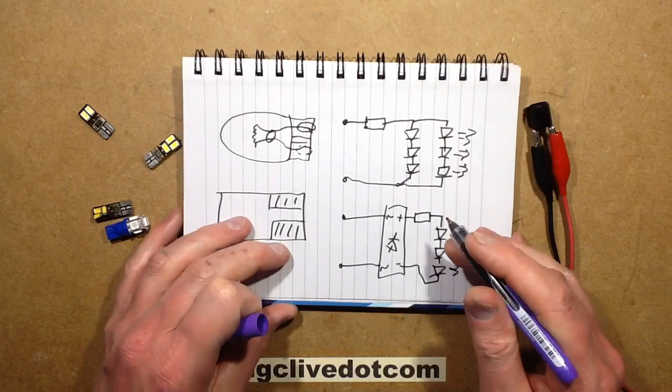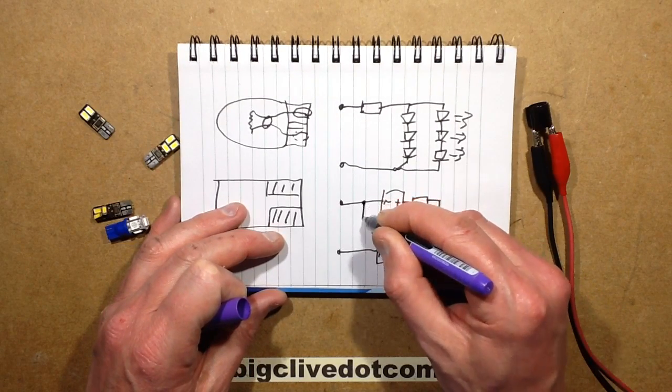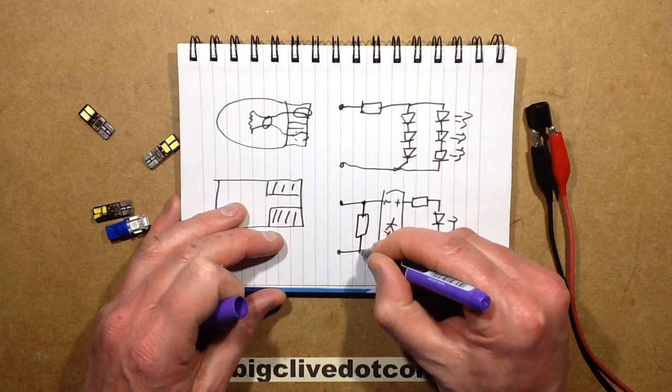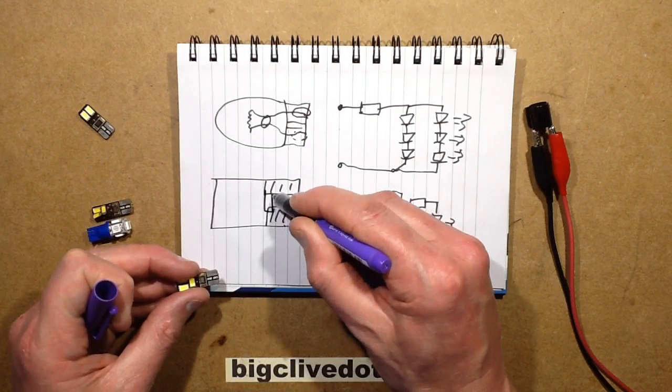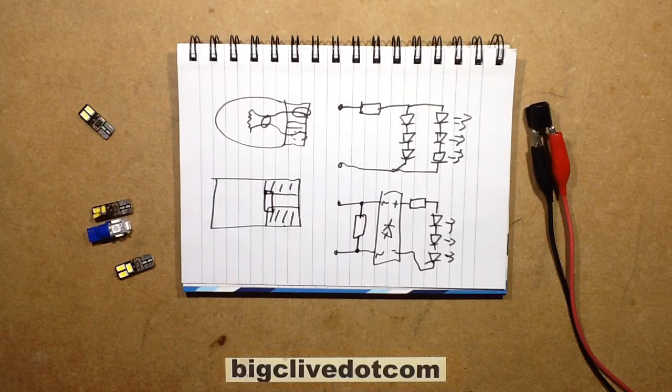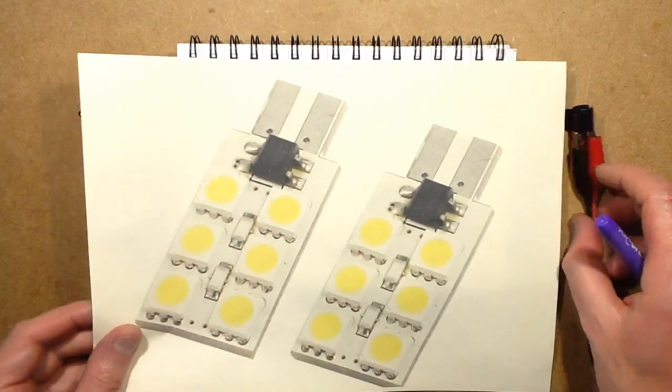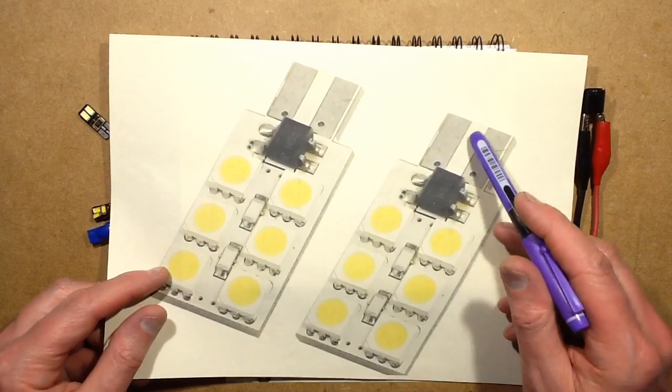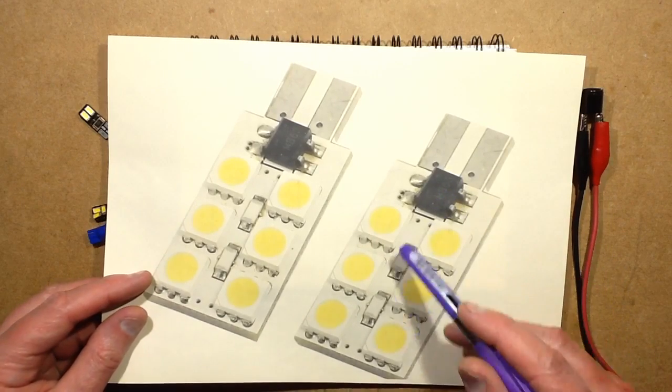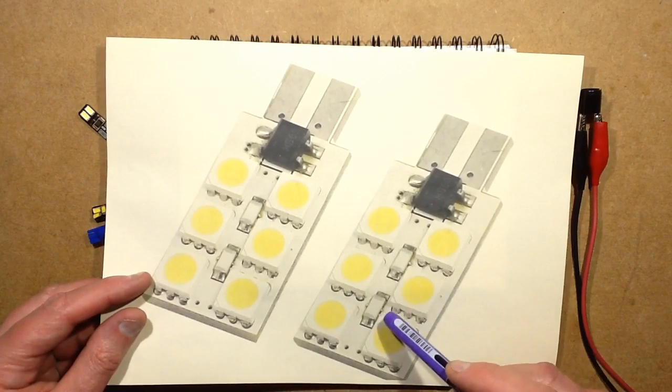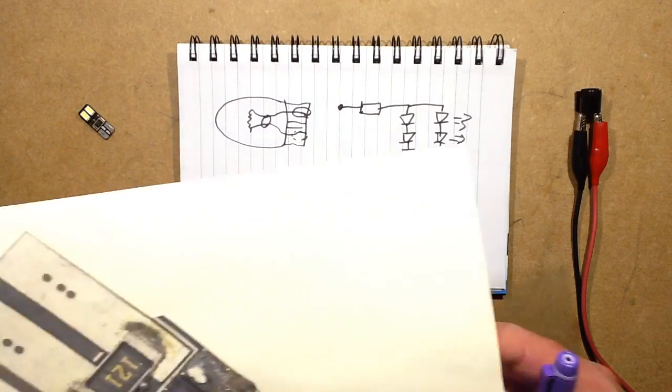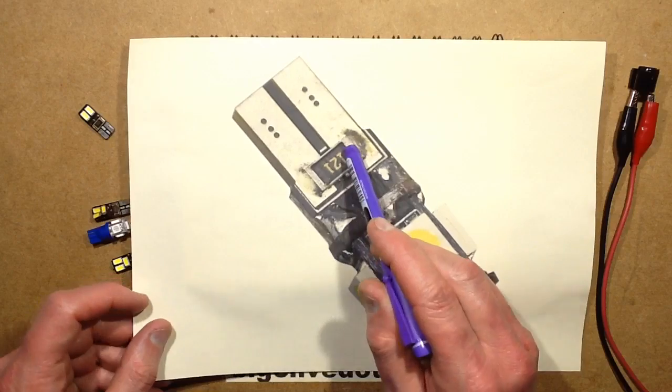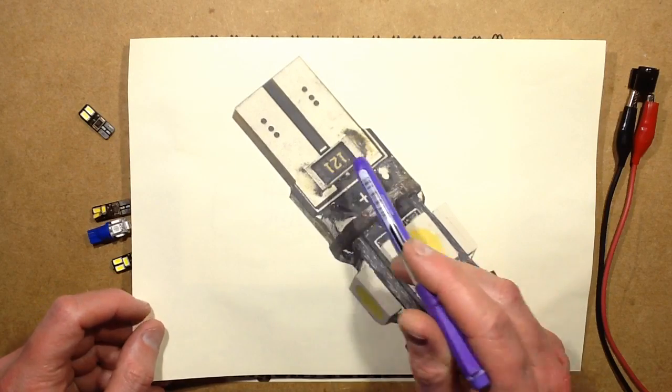So the way they got around that was they just added a big fat resistor across the connectors here, and quite often it's just soldered physically across. Here's the version without that resistor where it's just the bridge rectifier and then the strings of LEDs with resistor per string of LEDs. And here's the version where they've got that CANBUS thing in, where they've soldered in this case a 120 ohm resistor across those contacts.